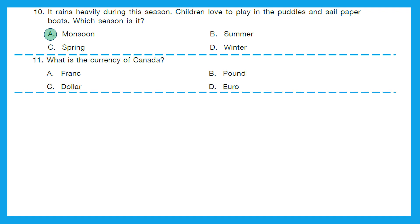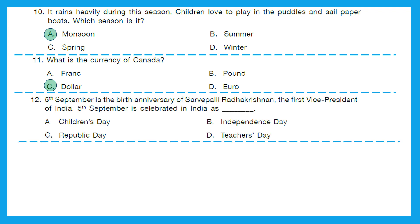Question 11: What is the currency of Canada? Is it franc, pound, dollar or euro? The right answer is option C, dollar. Question 12: 5th September is the birth anniversary of Sarvapalli Radhakrishnan, the first vice president of India. 5th September is celebrated in India as Children's Day, Independence Day, Republic Day or Teacher's Day? That is Teacher's Day. We celebrate Teacher's Day every year on 5th September.